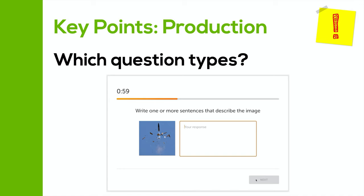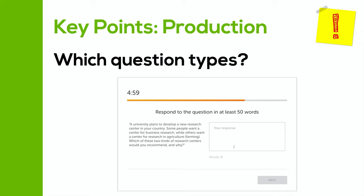The next writing question type is to write about a topic. For this, you have to respond to a prompt or a question, and you need to write at least 50 words. You have five minutes to do this one. This question type, in my opinion, is the hardest on the whole test, and I think a lot of students lose points because they can't answer this question type well. But luckily, you only have to do this question type once in the whole test. To get a good score on this, you need to be able to write a full paragraph in an academic style. I also made a video discussing this question type — you can find it in the description below.